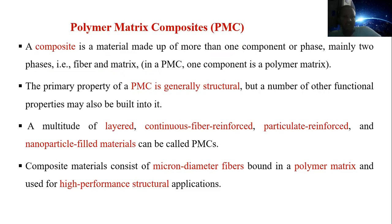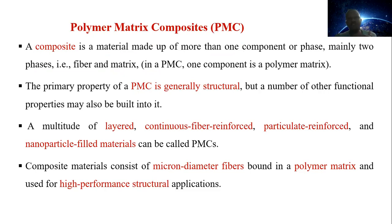In this case, thermoset polymers are considered as the matrix or the resin, and carbon fiber is considered as the fiber. This combination yields a high-performance material.